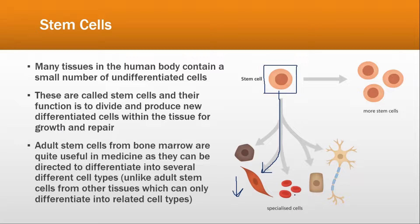Similarly, if the red blood cells in your body reduce in number, these stem cells would start differentiating into red blood cells as well. The same applies to all other cells. So stem cells are a unique type that can convert itself into any kind of differentiated or specialised cell.